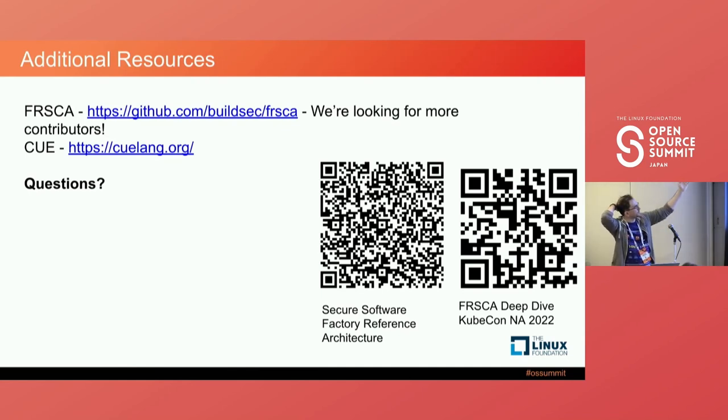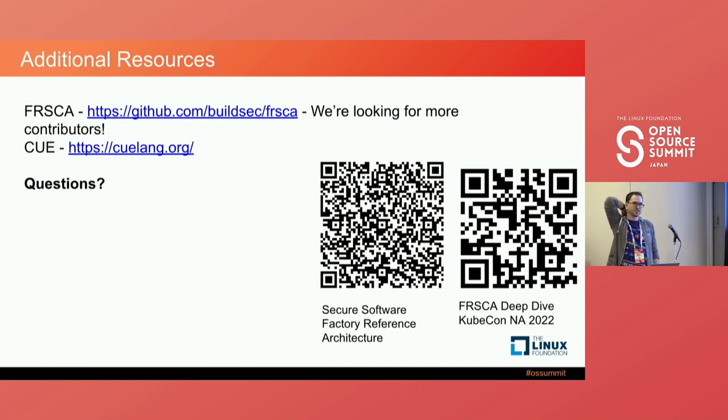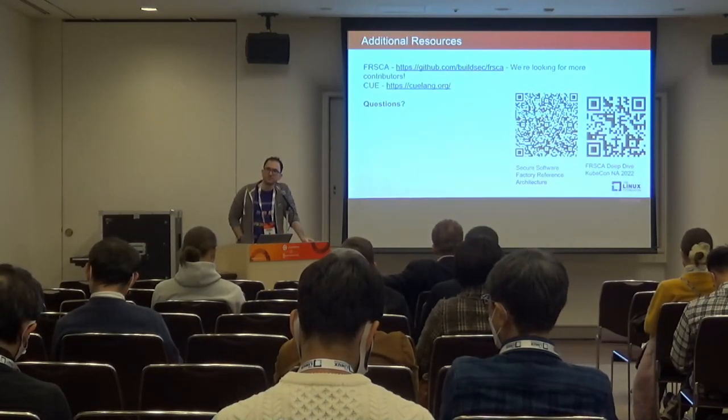There are additional resources here — QR codes linking to a deep dive into the actual architecture and the secure software factory reference architecture paper. Regarding SBOM types: right now we allow any sort of SBOM. The pipeline framework lets you restrict it — if you say we only generate SPDX through the SYFT tool, you can restrict that in the library. The pipeline framework should support pretty much any SBOM tool you'd want to use.